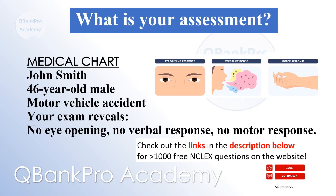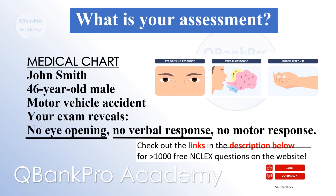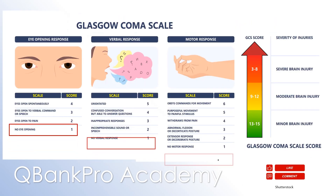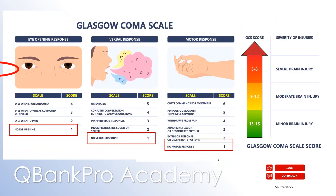What is your assessment? Glasgow Coma Score 3, calculated by adding the lowest score for each parameter.